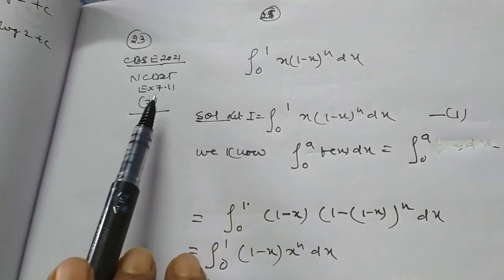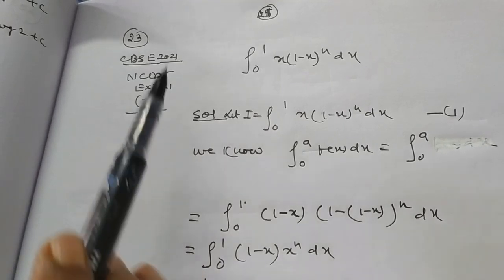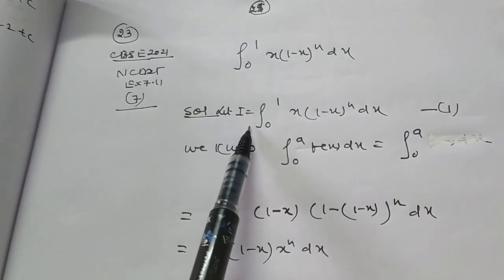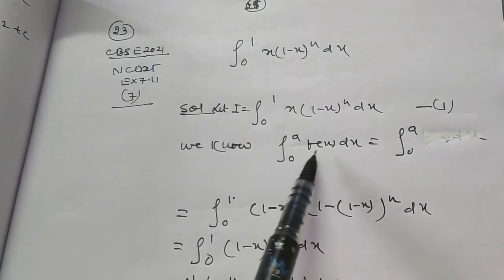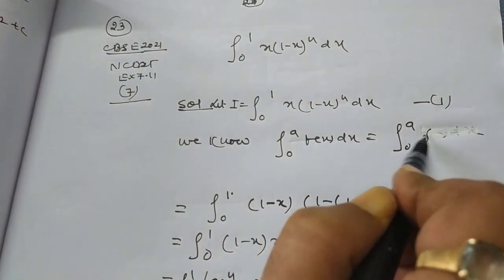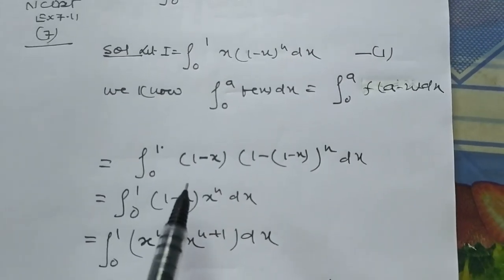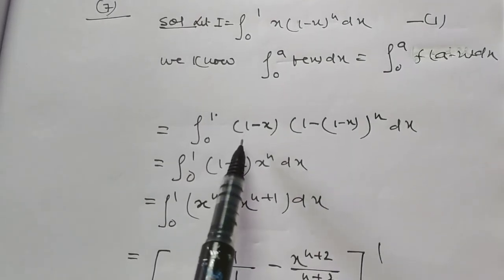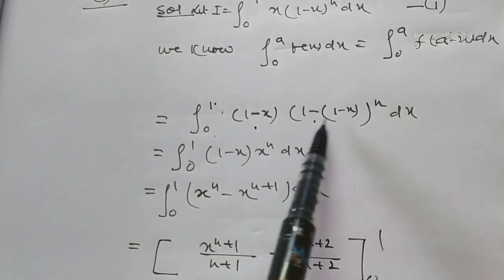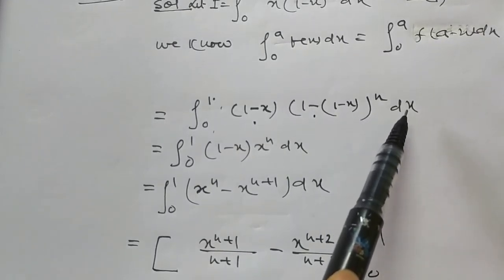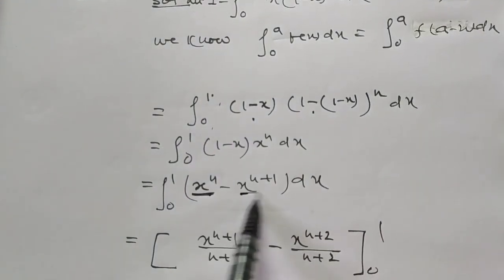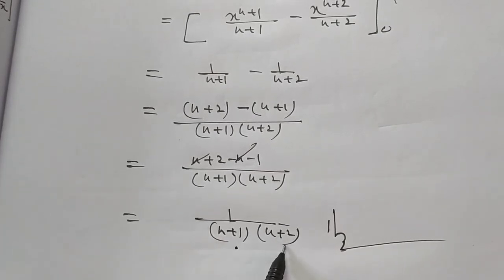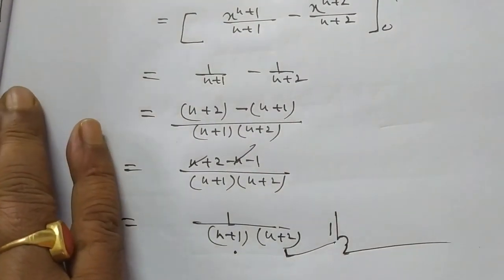NCERT exercise 7.11 problem number 7 is also in the CBSE sample paper: integral from 0 to 1 of x*(1-x)^n dx. This formula is based on the property: integral from 0 to a of f(x)dx = integral from 0 to a of f(a-x)dx. After applying this formula: integral of (1-x)*(1-(1-x))^n dx = integral of x^n - x^(n+1) dx. After solving, we get 1/(n+1) * 1/(n+2).